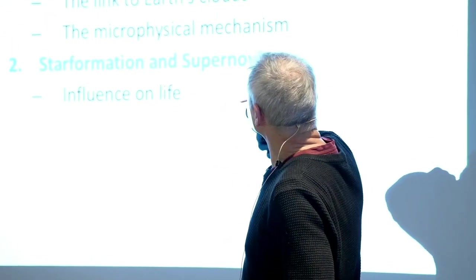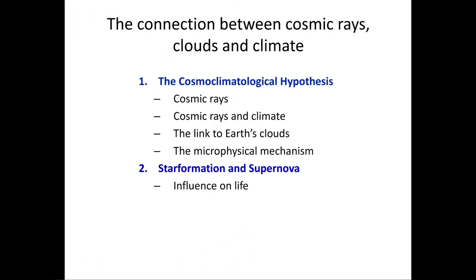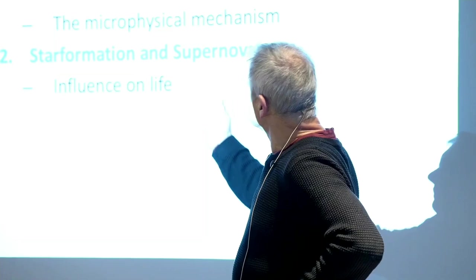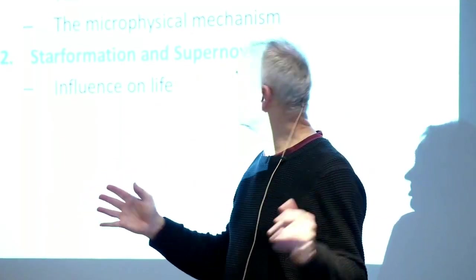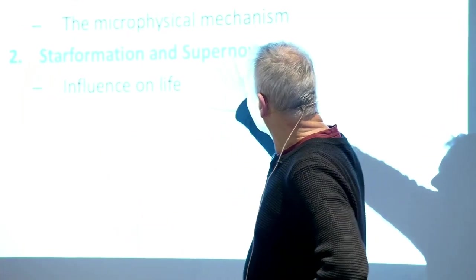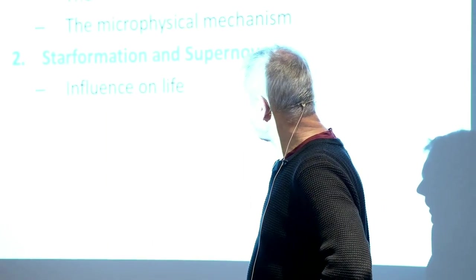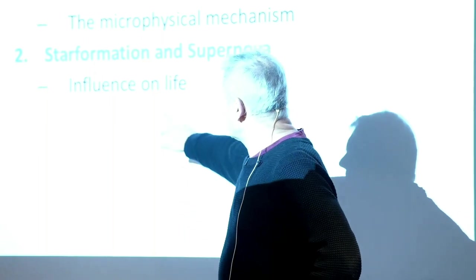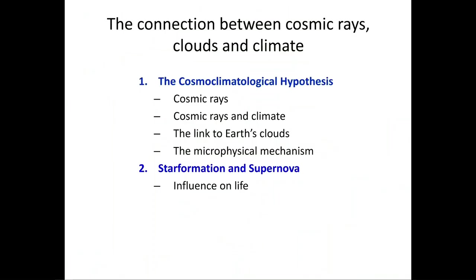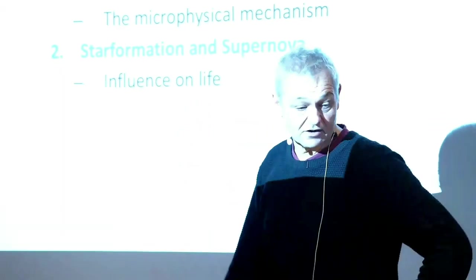What I'm going to talk about today is this idea that cosmic rays — I'm going to explain what they are — and each time there is a change in these cosmic rays, there seems to be a change in the Earth's climate. The link seems to be the Earth's cloudiness. And then the last part, I will show you that when we look at very long timescales, there seems to be a very close connection between these processes and the evolution of life here on Earth.